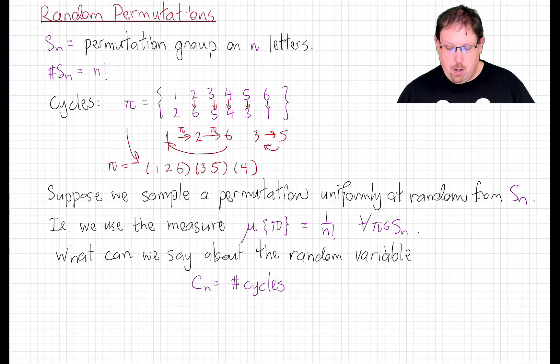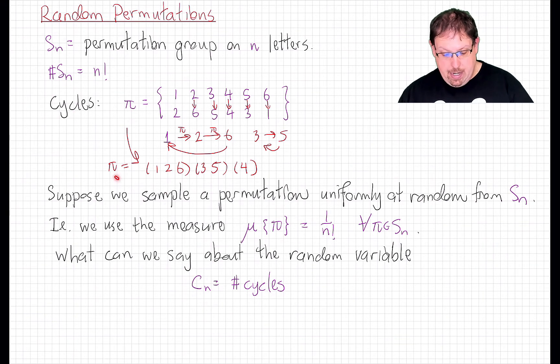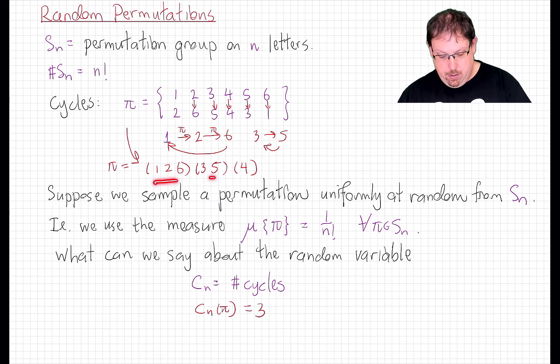And now I want to sample from that probability measure. And I have a random variable, C_n. So for example, with this outcome pi above, we showed that C_n of pi, the number of cycles, is equal to 3. 1, 2, 3 cycles. C_n is a random variable which always takes values between 1 and n.